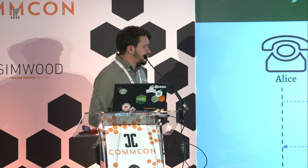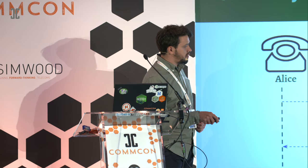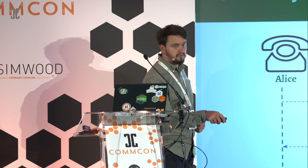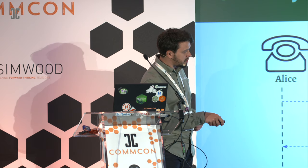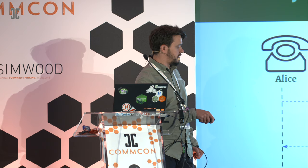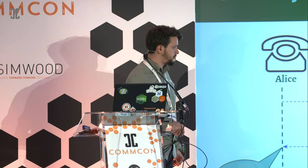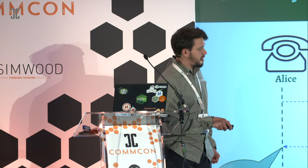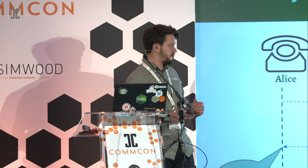The SIP flow looks something like this. You send an invite with SDP Alice, but you advertise the media relay's SDP. On the way back, the 200 OK contains Bob's SDP, but we advertise the media relay associated with Bob in the 200 OK and then acknowledge the call. Therefore Alice will see the SDP of the media relay, and Bob sees the SDP of the media relay associated with Alice.